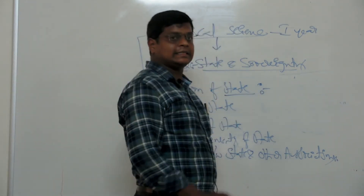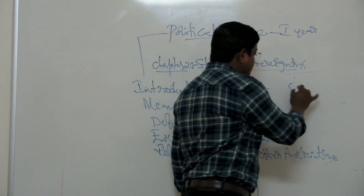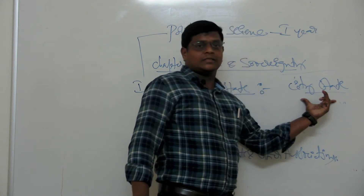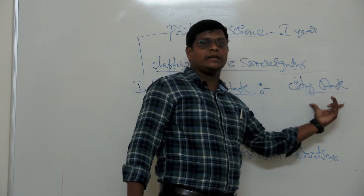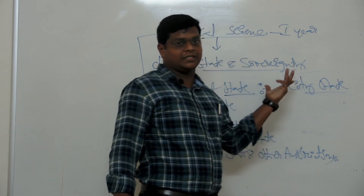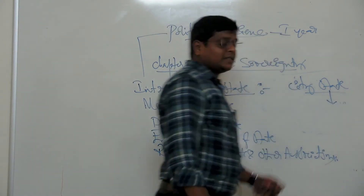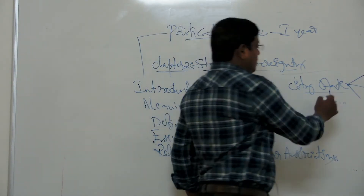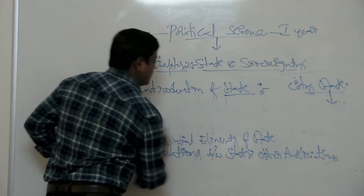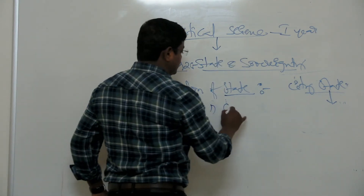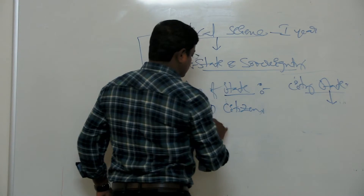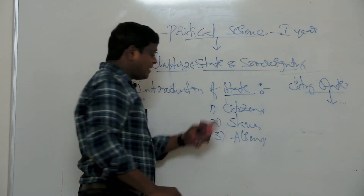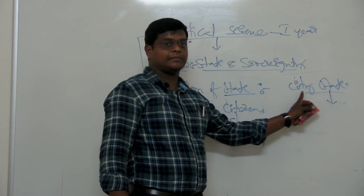The concept of state developed in ancient Greek period as city-states. Examples of city-states are Athens, Sparta, Macedonia, and Milan — there were many city-states in the 4th and 5th century BC. The study of city-states is nothing but political science. Every city-state had three types of people: one is citizens, the second is slaves, and the third is aliens. These are the three categories of people who lived in every state.